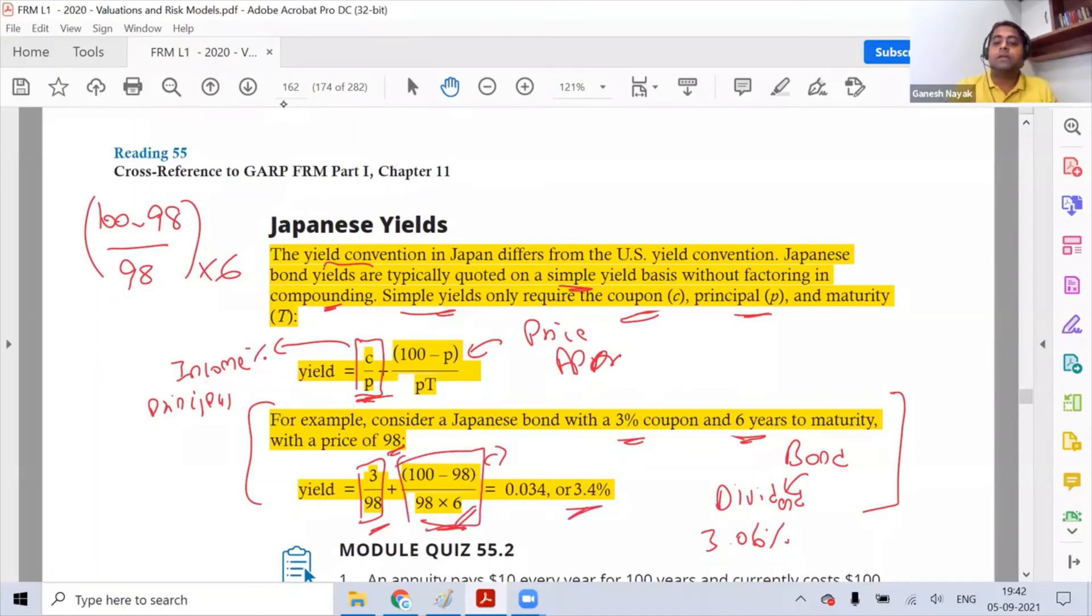So this will also contribute towards your yield and the first part will also contribute. Both of them are taking you to 3.4%. That means the second part, which is the discount benefit that you are getting, is adding around 0.34%. It was actually making a bigger amount but it was spread out for 6 years.